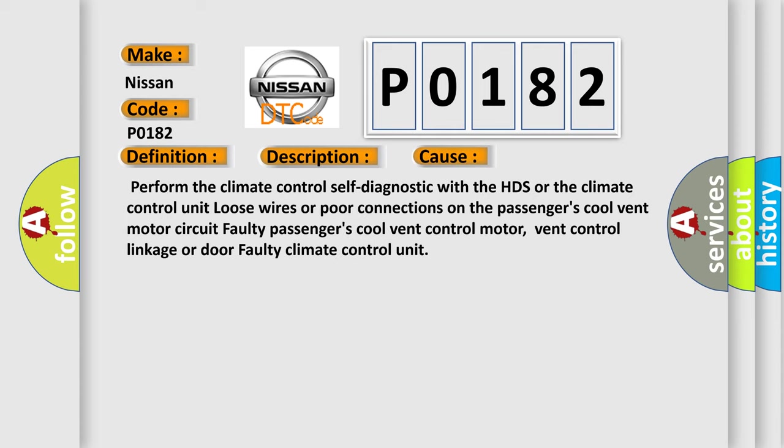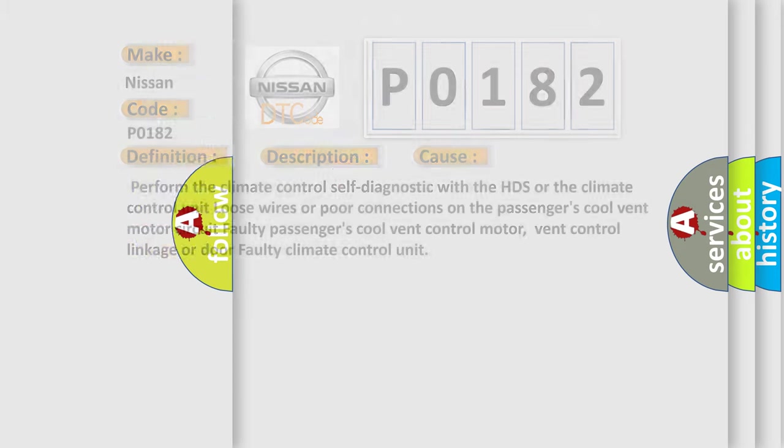Perform the climate control self-diagnostic with the HDS or the climate control unit. Loose wires or poor connections on the passenger's cool vent motor circuit. Faulty passenger's cool vent control motor. Vent control linkage or door faulty climate control unit. The airbag reset website aims to provide information in 52 languages.